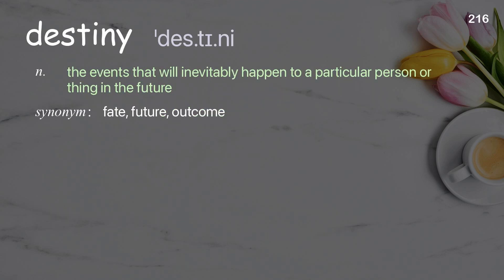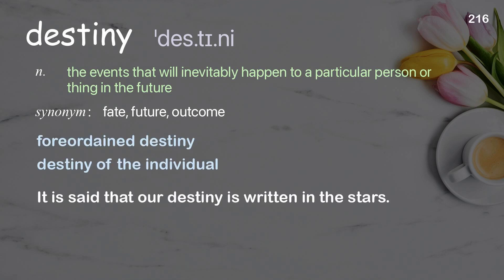Destiny: the events that will inevitably happen to a particular person or thing in the future. Examples: foreordained destiny, destiny of the individual. It is said that our destiny is written in the stars.